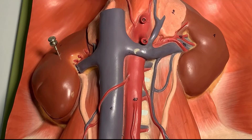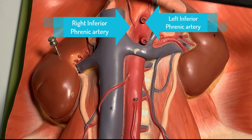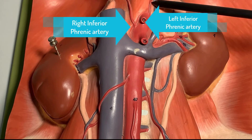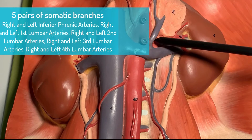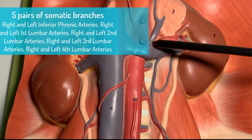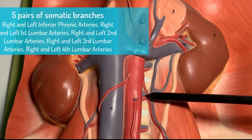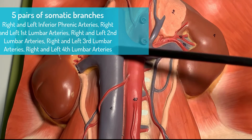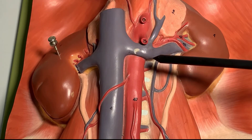On this model, I can show you the five paired somatic branches. You can see the left and right inferior phrenic arteries going towards the undersurface of the diaphragm. For the first lumbar artery, I would have to remove these vessels, which I cannot do here. But I can show you the second, third, and fourth lumbar arteries on the left side. To see these vessels on the right side, we would need to remove the inferior vena cava. Thank you for watching this video.